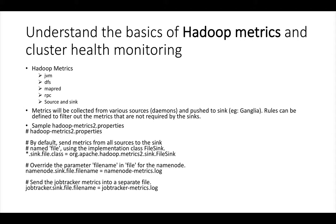We get metrics for RPC, remote procedure calls. All these things have to be collected and stored somewhere. Metrics can be collected from various sources — the sources can be daemon processes — and pushed to sinks such as Ganglia or Cloudera Manager. If you are using Ganglia, you can also define rules to filter out metrics that are not required.